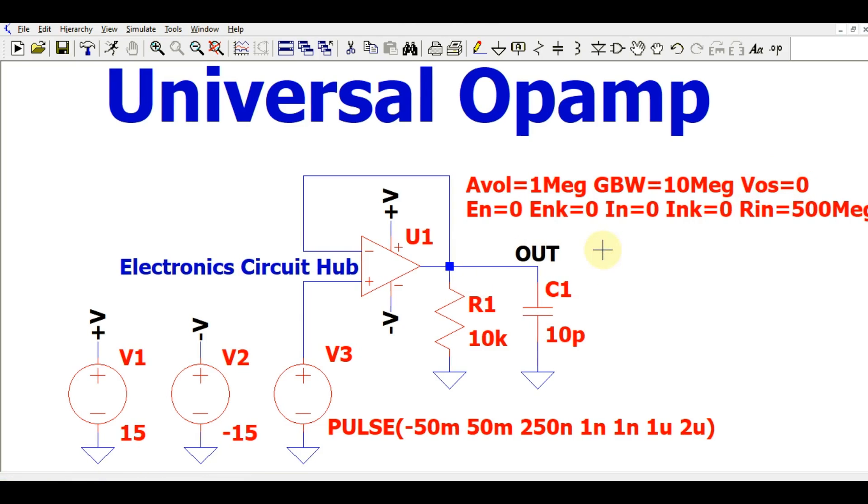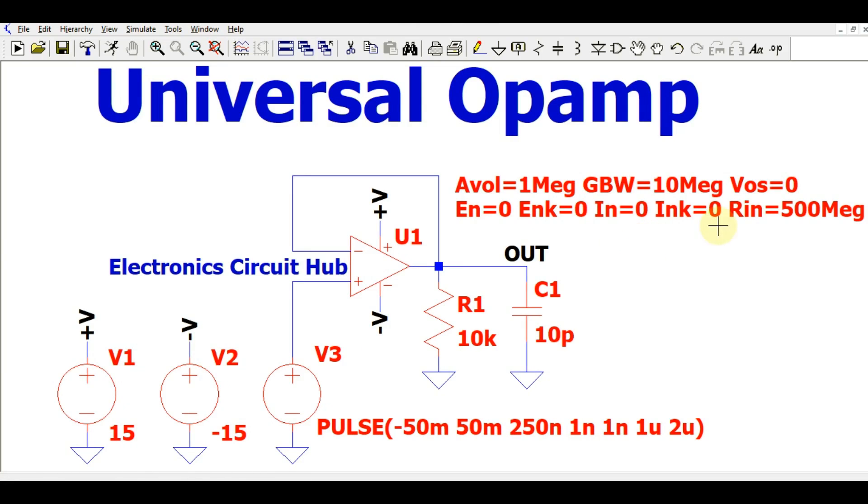And you can see here the output offset voltage is given 0 and you can also find some other parameters like the RIN, that is input impedance of universal op-amp, is 500 megaohm which tends to infinite. You can think how much the value of 500 megaohm if you talk about a universal op-amp, and how much your voltage gain, open loop voltage gain, and how much is your gain bandwidth product.